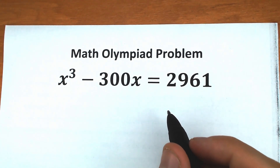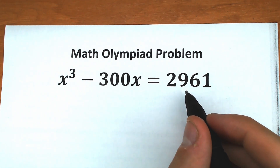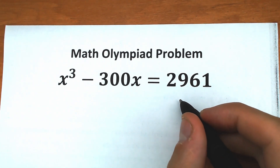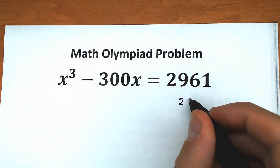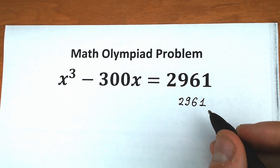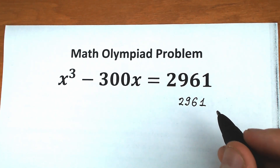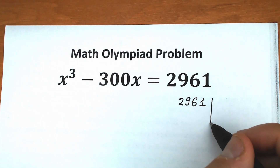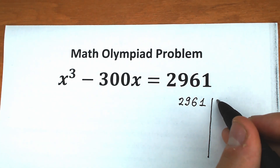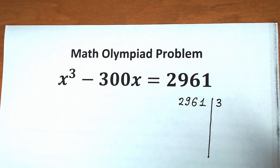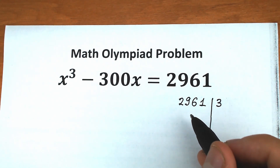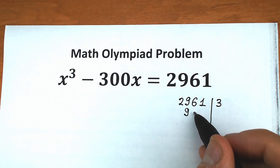First of all, I suggest you find the factors of this constant on the right hand side. We have 2,961 and let's find its factors. First, let's divide this constant by 3. If we divide by 3, we have 987.